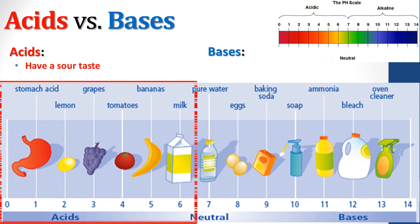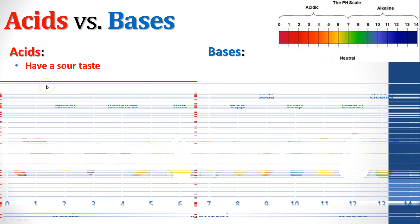Acids have a sour taste. We're going to find acids on this side of the pH scale. Stomach acid, I know I don't recommend you try it, lemon, grapes, tomatoes, bananas, even milk. It's slightly acidic, pretty close to neutral, but slightly acidic. These are all going to have a somewhat sour taste.